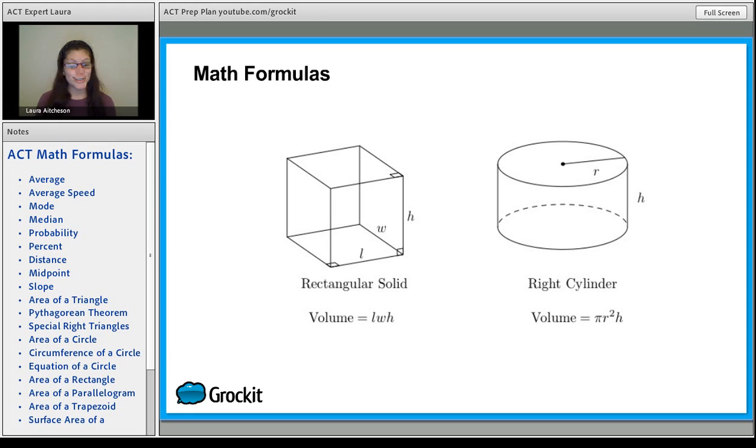Our last two ideas are 3D images. When you're talking about volume, you want to multiply length, width, and height if it's a rectangular solid. If it's a right cylinder, make sure you take pi r squared, which is the area, times the height.